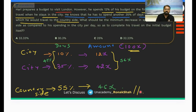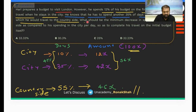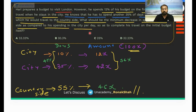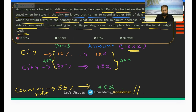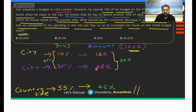Are you all clear up till now? Just confirm in the chat box because the question is almost solved. The question asks: what should be the minimum decrease in spending in the countryside as compared to spending in the city per day, so as to complete his travel on the initial budget itself?